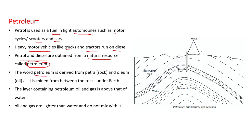The word petroleum is derived from 'petra' meaning rock and 'oleum' meaning oil, as it is mined from between the rocks under the earth. The layer containing petroleum oil and gas is above that of water. In this diagram, at the bottom is water, above it is oil, and above that is gas. By digging wells, these oil and gas are obtained.